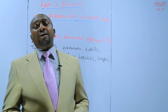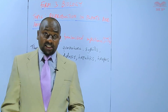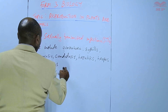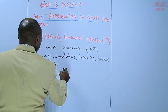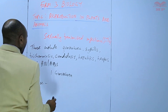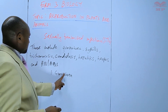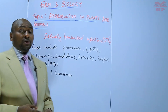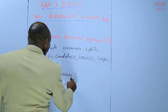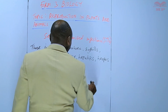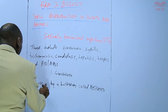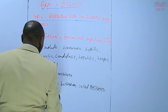For those diseases that do not have a treatment, how can they be prevented? Number one, we are going to start with gonorrhea. Gonorrhea is a bacterial disease — it is caused by a bacterium called Neisseria gonorrhoeae. That is a scientific name and therefore it should be written according to the principles of binomial nomenclature.